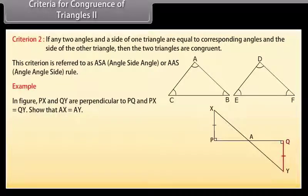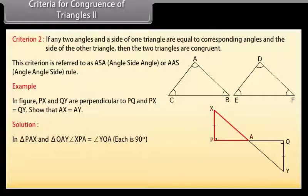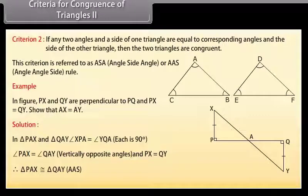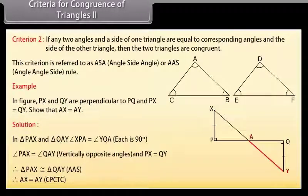In the figure, PX and QY are perpendicular to PQ, and PX is equal to QY. Show that AX is equal to AY. Solution: In triangle PAX and triangle QAY, angle XPA is equal to angle YQA because each is 90 degrees. Angle PAX is equal to angle QAY because these are vertically opposite angles, and PX is equal to QY. Therefore, by AAS congruence rule, triangle PAX is congruent to triangle QAY. Therefore, AX is equal to AY by CPCTC.